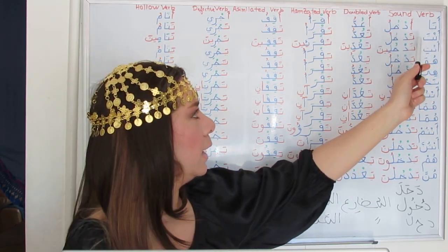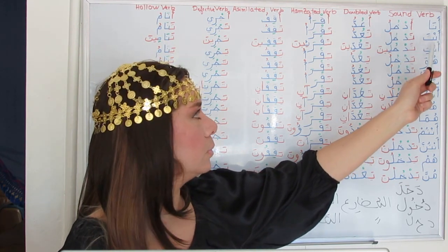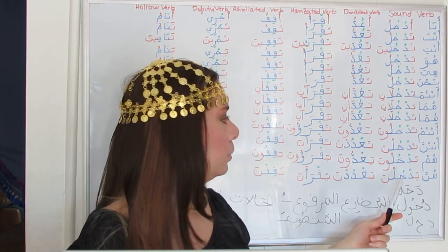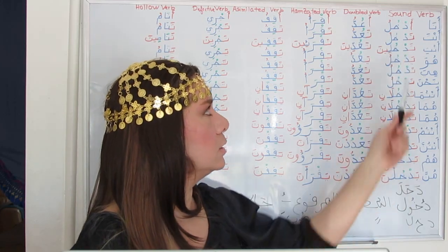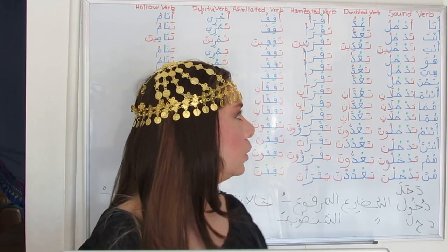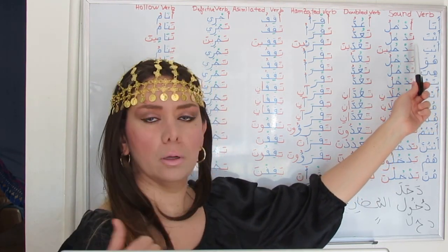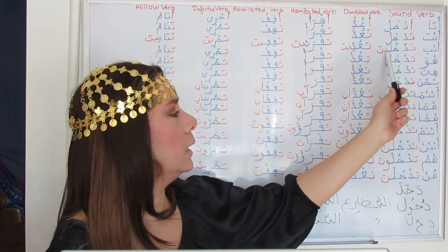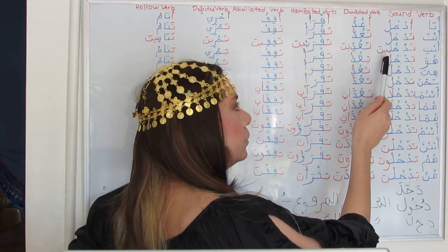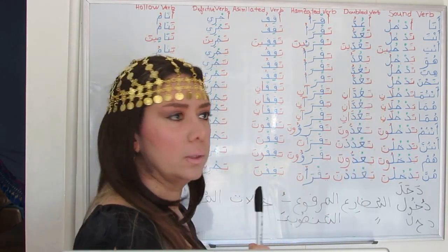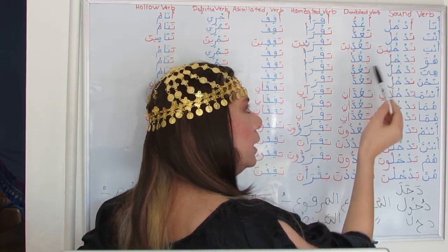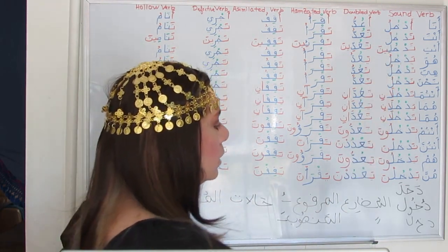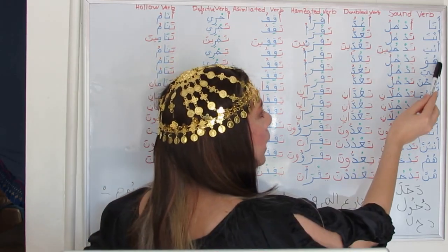Enta tadkhulu — we have the prefix 'ta' from 'enta.' Enti tadkhulina — we have both a prefix and a suffix together. The suffix 'ina' comes with a long vowel, preceded by a Kasra. Kasra is placed under the last radical of the root. Tadkhulina. Huwa yadkhulu — with the prefix 'ya.'